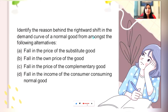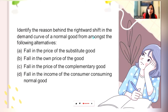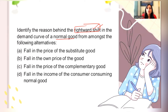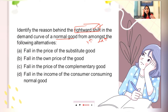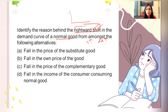Identify the reason behind a rightward shift in the demand curve of a normal good from amongst the following alternatives. A normal good is one where when your income is increasing, demand is also increasing. So if your income is increasing and it is a normal good, then your demand will be more, resulting in a rightward shift.